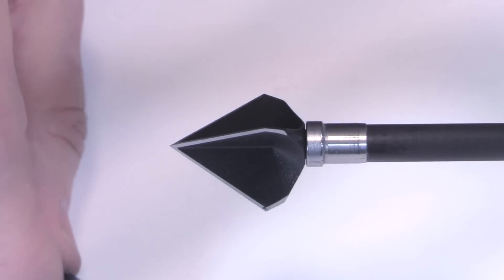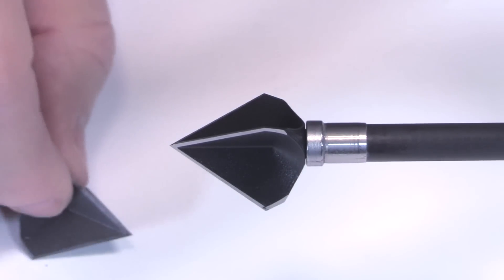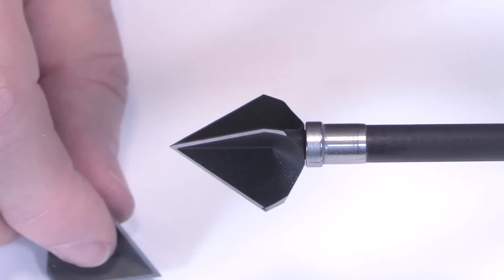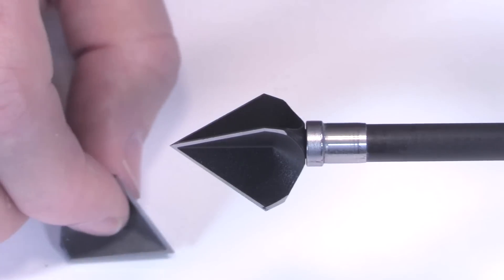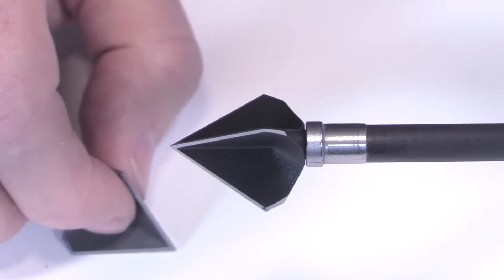And for resharpening, the blade, the bevel angle is 30 degrees on each side or 60 degrees total, which allows you to just lay it flat on any surface, like a sharpening stone.